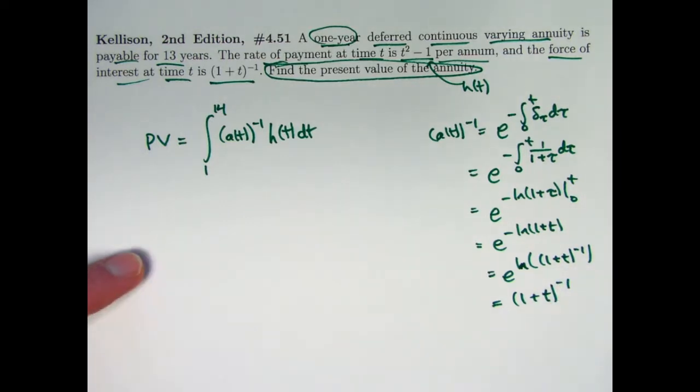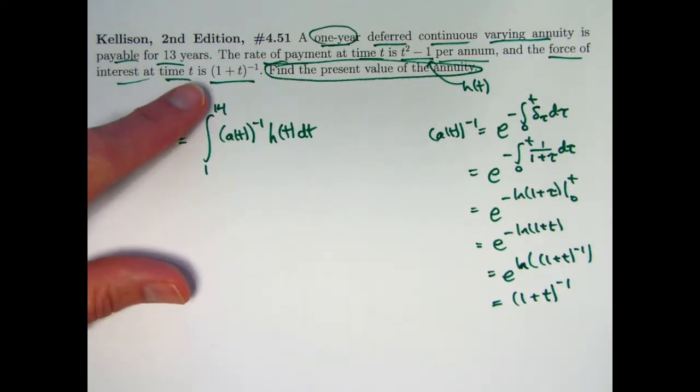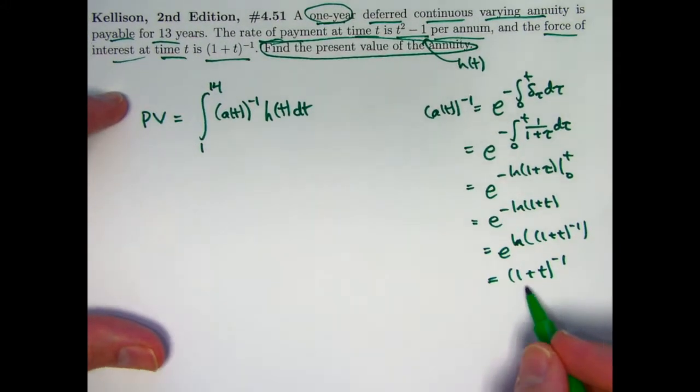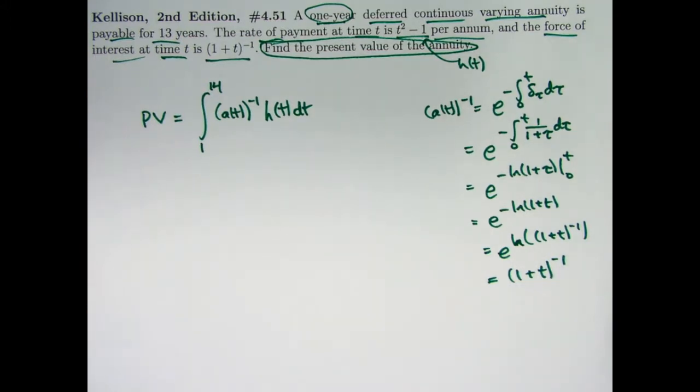So that's kind of interesting and this is true. When the force of interest is 1 plus t to the negative 1, so is the discount factor function 1 plus t to the negative 1. And the accumulation function would be 1 plus t. This is really simple interest.